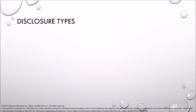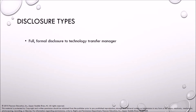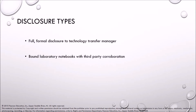Disclosure types include: full formal disclosure to a technology transfer manager, bound laboratory notebooks with third-party corroboration, completion of a disclosure checklist, and including drawings and sketches.